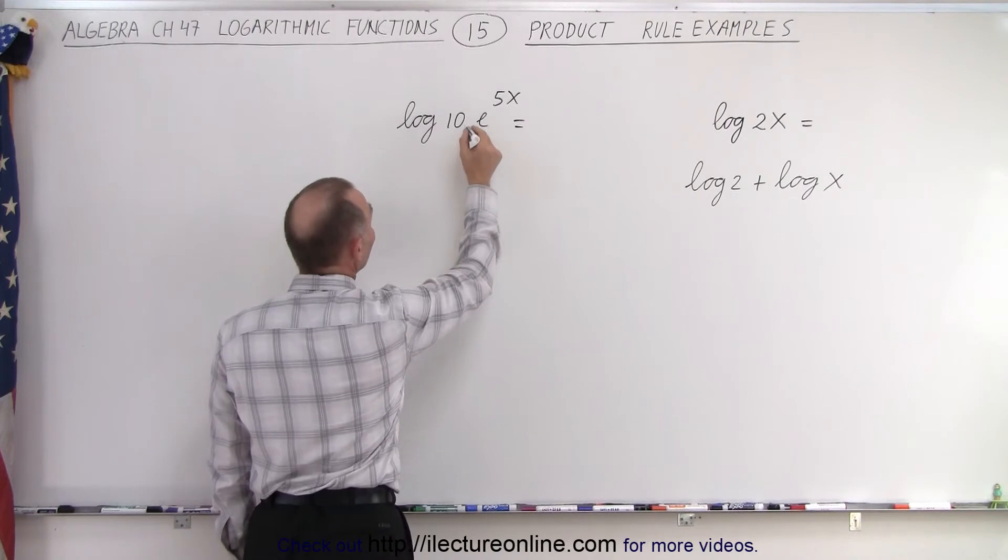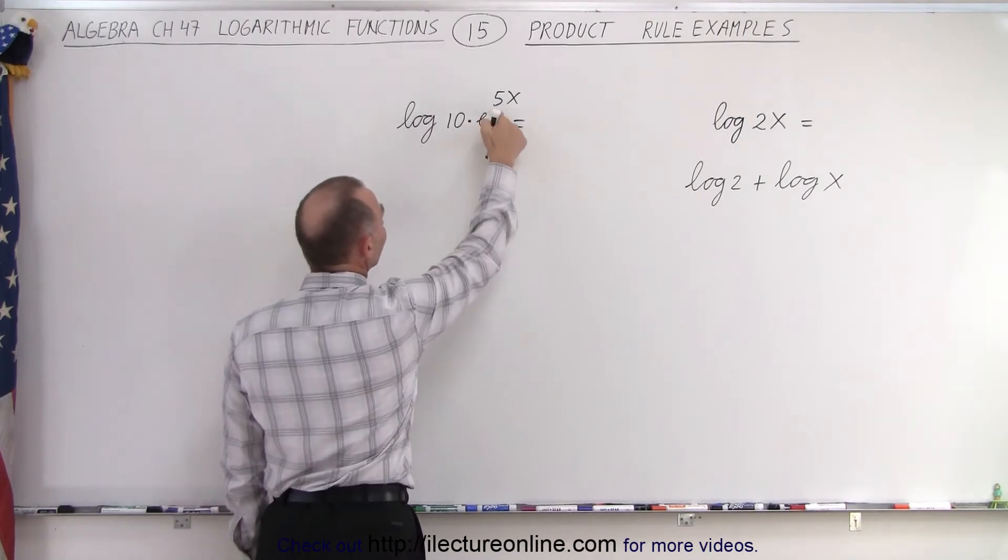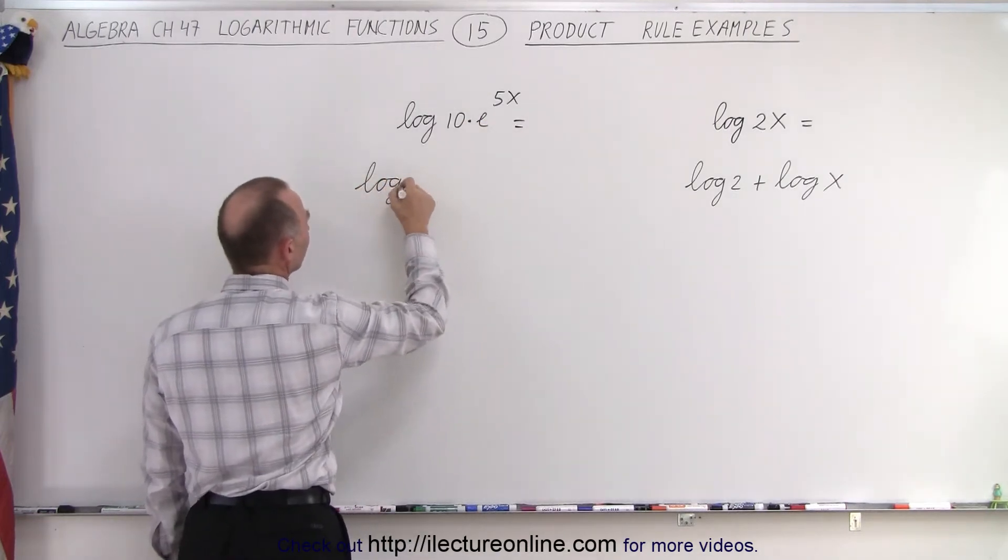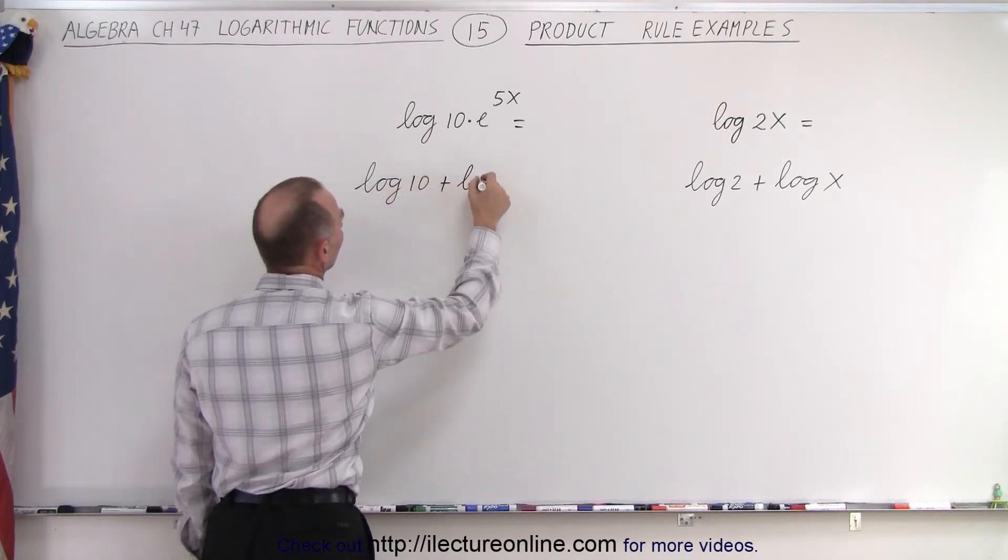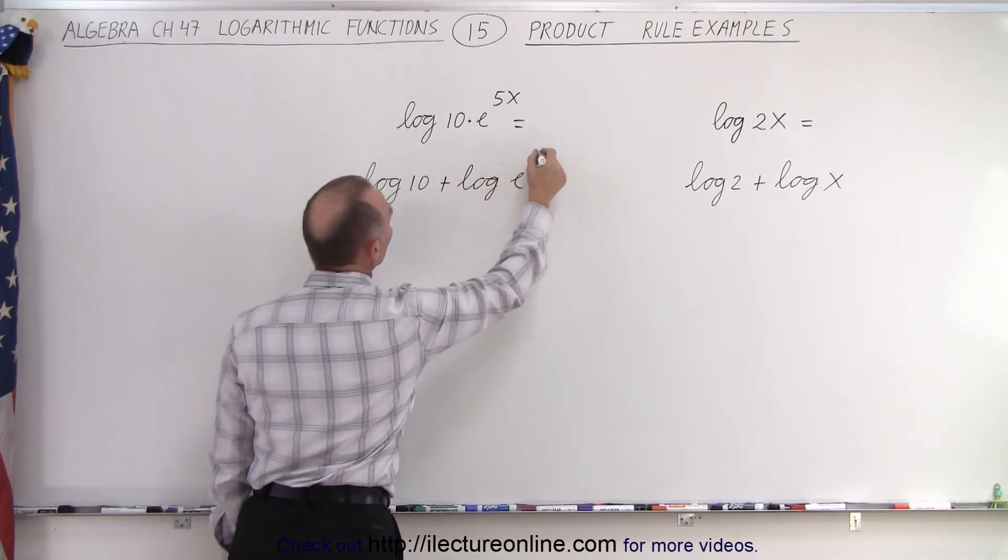Here again notice it's 10 multiplied times e to the 5x. So this can be written as the log of 10 plus the log of e to the 5x.